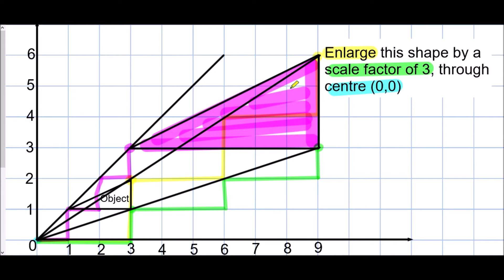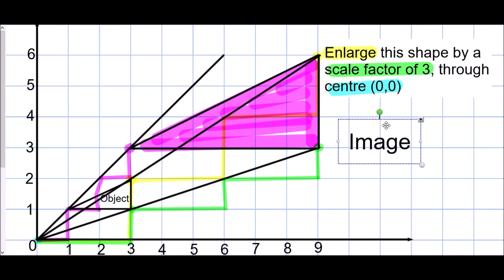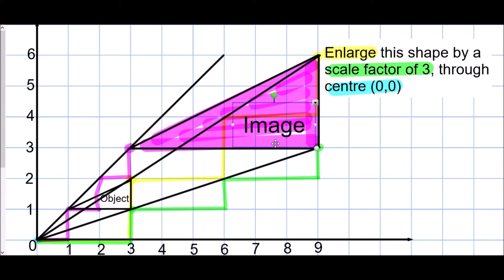The original shape is called the object. The name for the other version — the enlarged version that you have actually performed the transformation on — is the image.